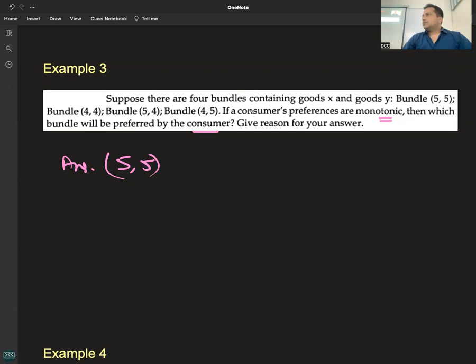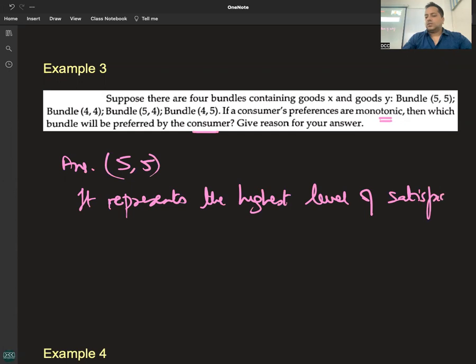has monotonic preferences, he will choose bundle (5,5). It represents the highest level of satisfaction among the four options.